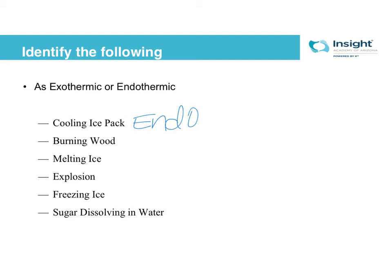Melting ice: my drink is going to get cold, which means the ice is absorbing or taking in the heat from my drink. You can also think about it in terms of state changes — we're going from solid to liquid, which means the molecules are moving around more and gaining heat. So melting ice is endothermic.